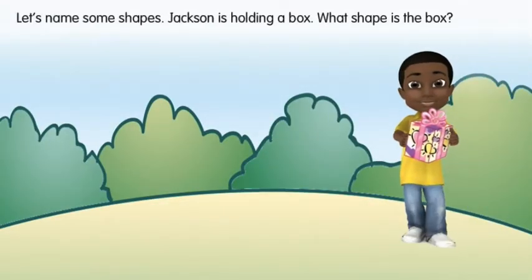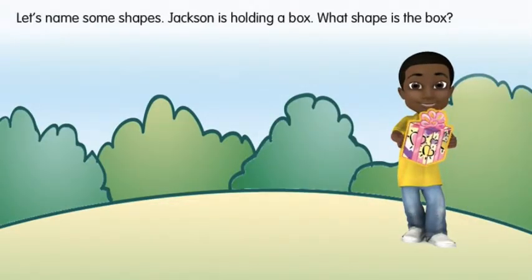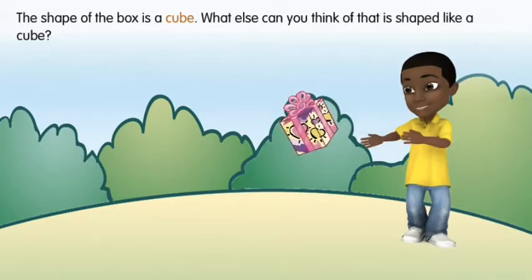Let's name some shapes. Jackson is holding a box. What shape is the box? The shape of the box is a cube.